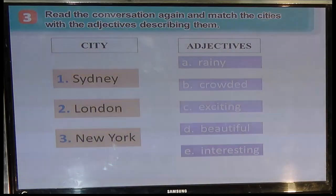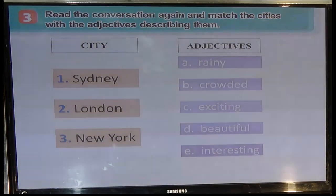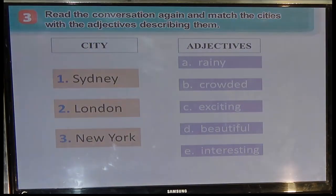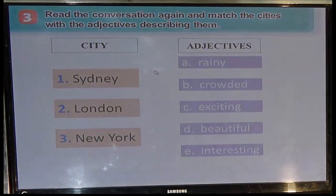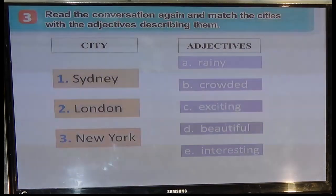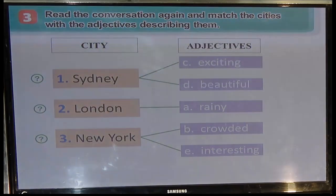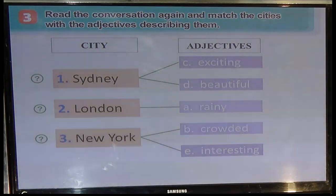Now you come to Task 3: Read the conversation again and match the cities with the adjectives describing them. Ở đây chúng ta có ba thành phố: Sydney, London, và New York, và các tính từ miêu tả là rainy, crowded, exciting, beautiful, interesting. The answer is: Sydney — exciting, beautiful; London — rainy; New York — crowded and interesting.